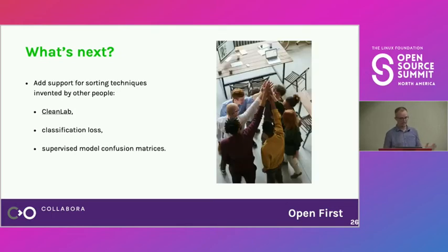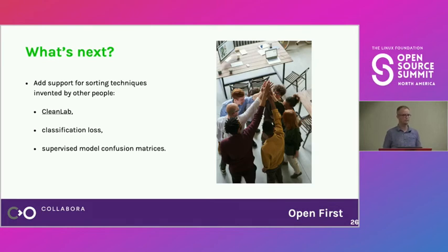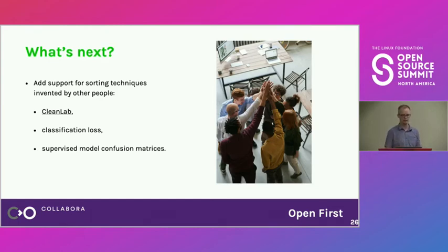We're not the only ones interested in this problem. There are complementary sorting techniques: CleanLab uses trained models to predict if there's an error — really interesting, though it didn't catch the lion among the red wolves. There's also a FastAI community technique that checks which training examples have the highest loss, reasoning that if the model has a hard time learning it, it may be a labeling mistake. This works, but on image search datasets with too many errors, it's no longer a reliable signal.